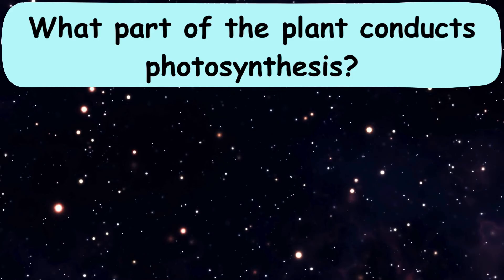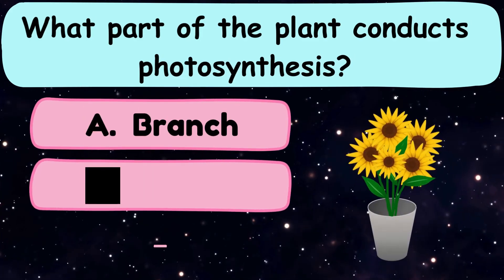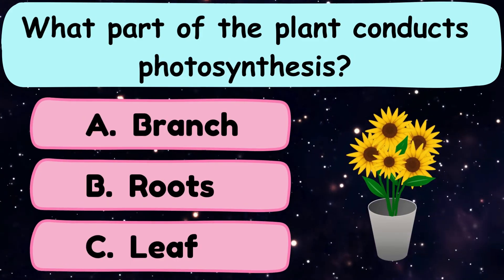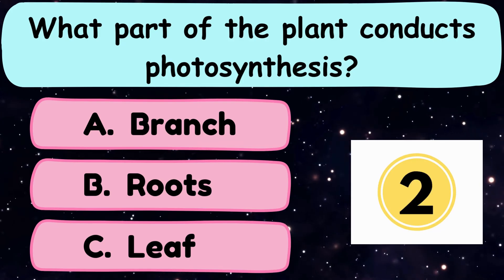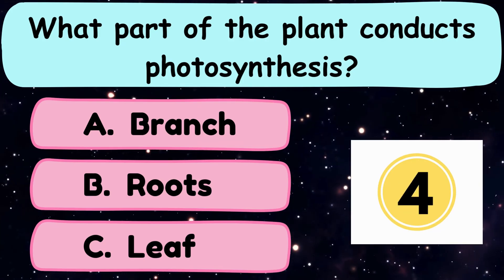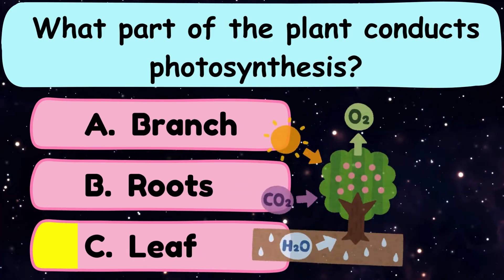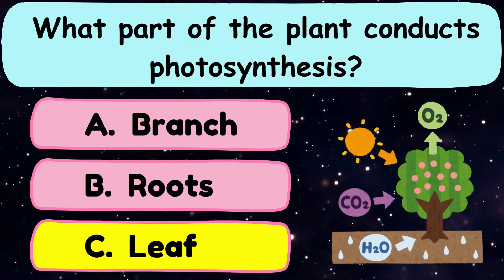Question number 29. What part of the plant conducts photosynthesis? A. Branch, B. Roots, or C. Leaves? The correct answer is option C. Leaves.